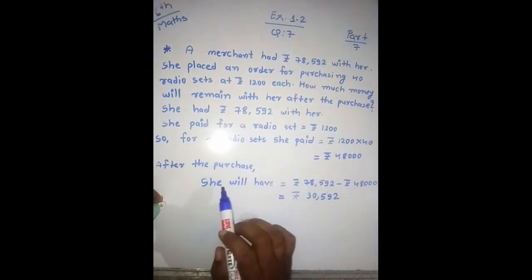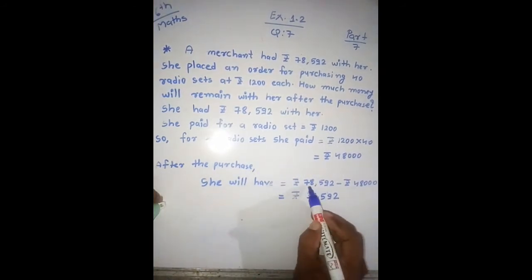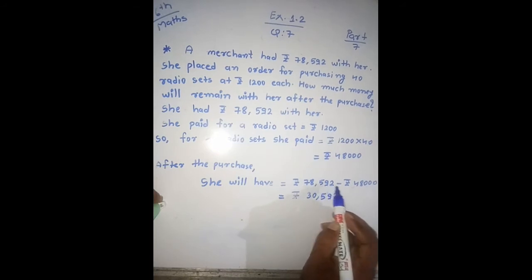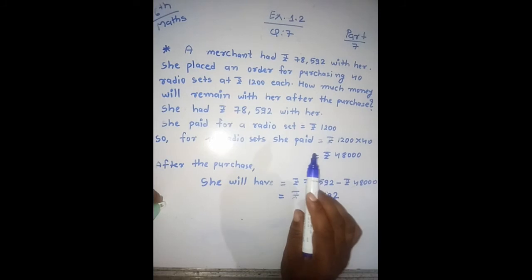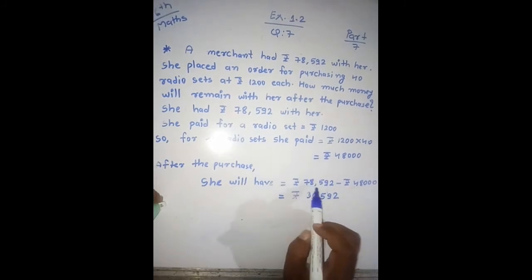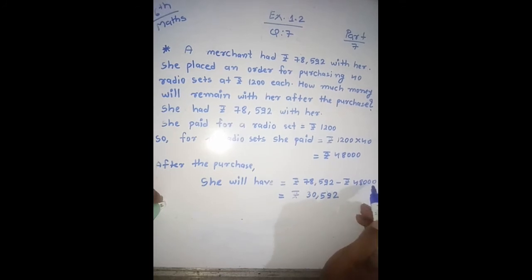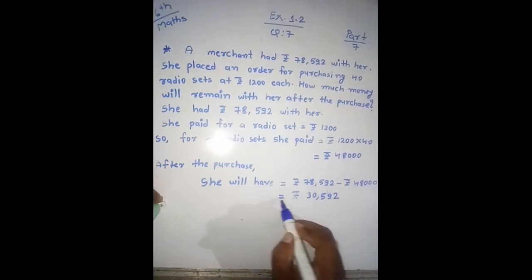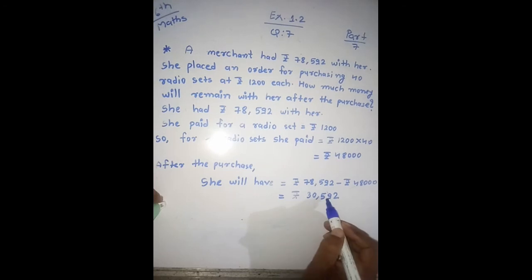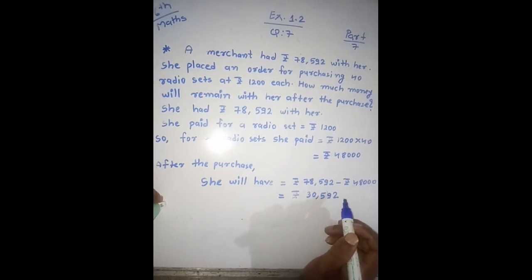After the purchase, she will have 78,592 minus 48,000. Jo uske paas tha pehle 78,592 which was the amount she had, minus karne pe uske paas 30,592 rupees bacha. So your answer will be 30,592 rupees.